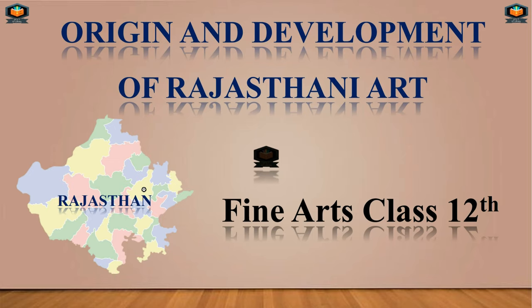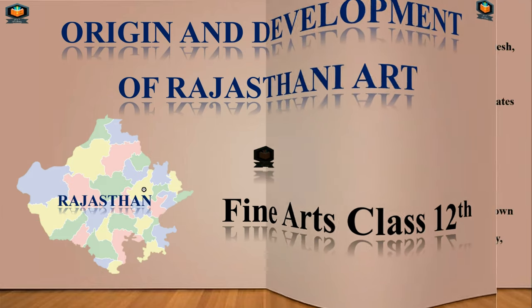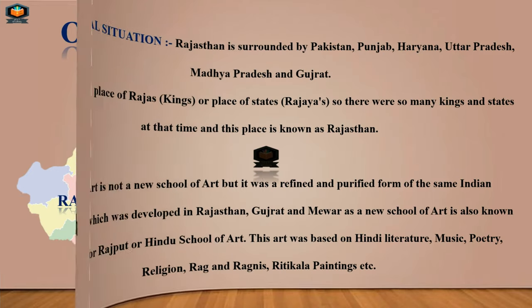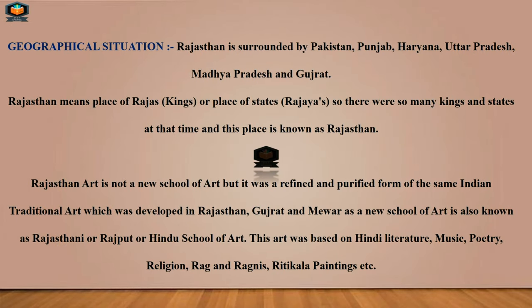This video discusses first of all the geographical location of Rajasthan. Rajasthan is surrounded by Pakistan, Punjab, Haryana, Uttar Pradesh, Madhya Pradesh, and Gujarat. These are the neighboring states of Rajasthan, and one neighboring country is Pakistan.